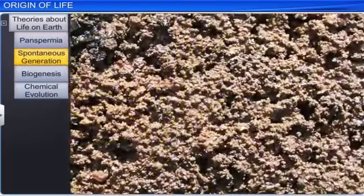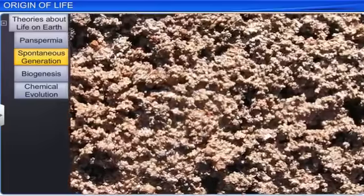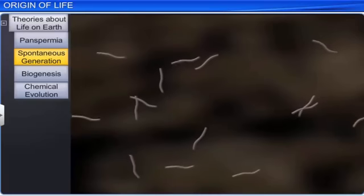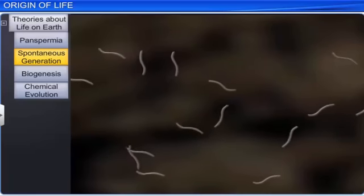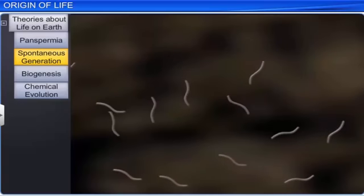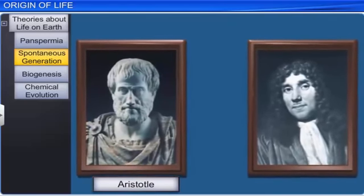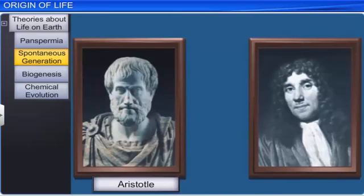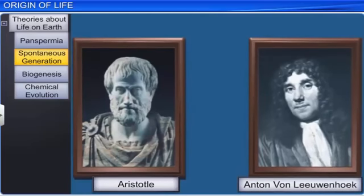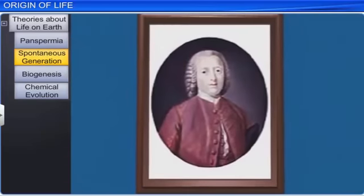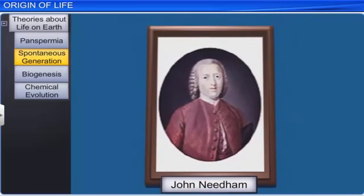Another belief was that life arose from inanimate things. The theory of spontaneous generation assumed that life came out of non-living, decaying and rotting matter such as stones, straw and mud. Even the famous Greek thinker and philosopher Aristotle believed in this theory. In fact, this theory was used to explain even Anton von Leeuwenhoek's findings of animalcules using the simple microscope. Moreover, some scientists such as John Needham supported the theory of spontaneous generation by conducting some experiments.